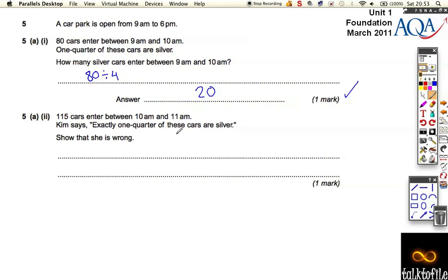115 cars enter between 10 and 11. Kim says exactly one quarter of these cars are silver. Show that she's wrong. Well, one quarter of 115, we've got to divide it by 4.